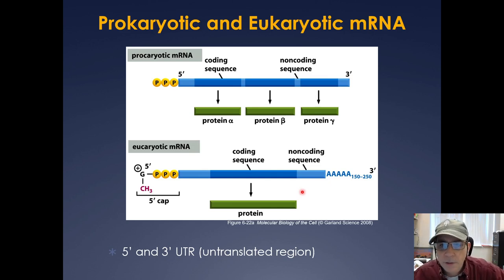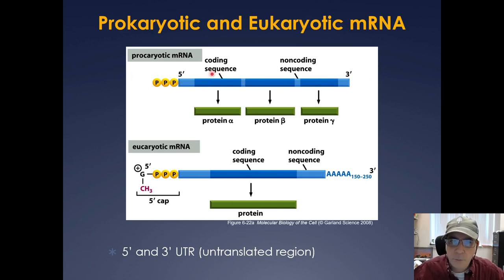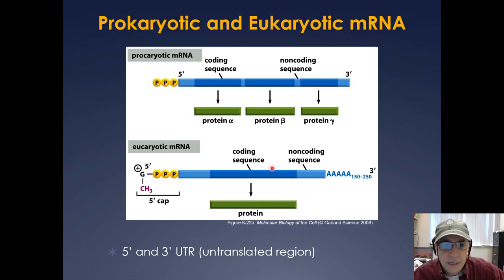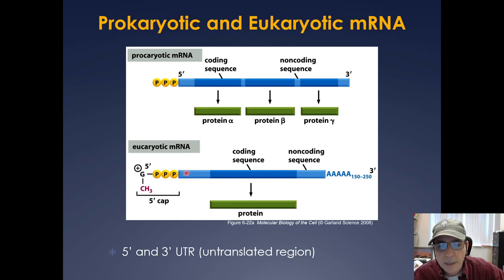Here's another example of the differences. A prokaryotic mRNA doesn't have a five prime cap, it's polycistronic forming an operon, and there's no splicing — just the coding sequence, which can give rise to multiple different proteins as the ribosome translates it. In the case with eukaryotic RNAs, by and large they make a single protein. They contain a five prime cap, a five prime and three prime untranslated region (5' UTR and 3' UTR), and then the protein coding sequence, plus a poly-A tail on the end.